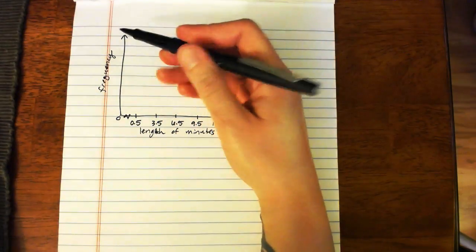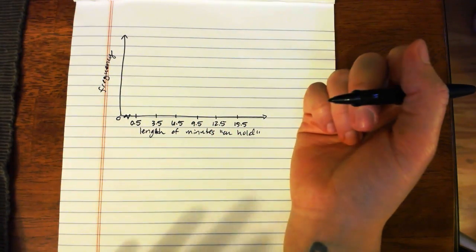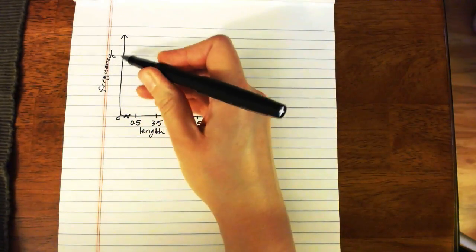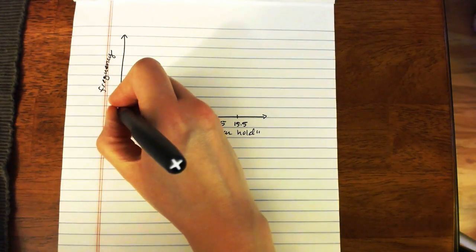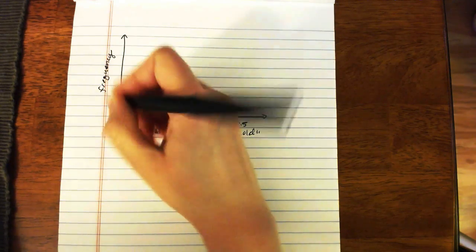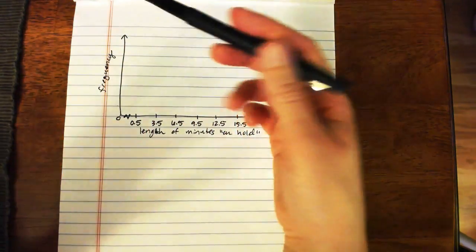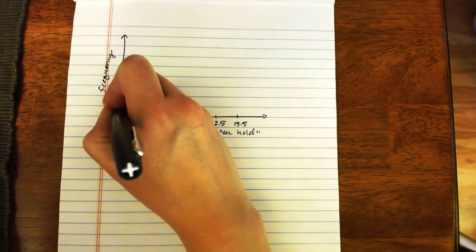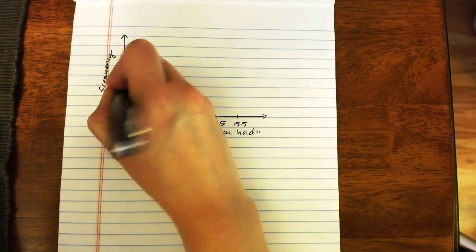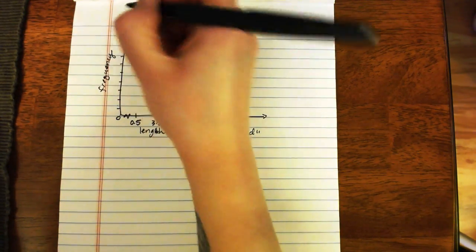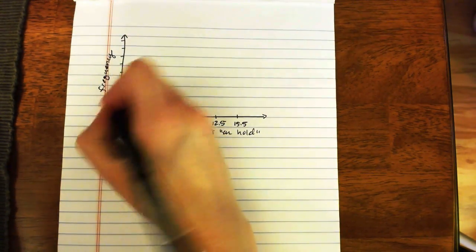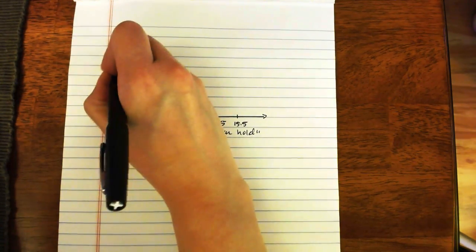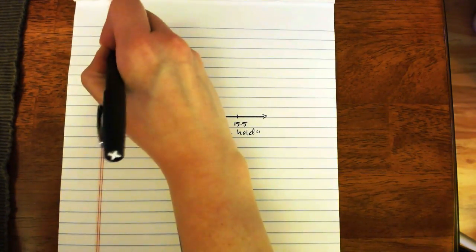And then up the side, we're going to put the frequency. Our lowest class had a frequency of 1. Our highest class had a frequency of 17. So we need to be able to go all the way up to 17. You can do that in units of 1, 2, 5, 10, whatever increments make sense. Since we only need to go as high as 17, maybe I'll go up in units of 2. And again, those should be equidistant. So 2, 4, 6, 8, 10, 12, 14, 16, and 18.